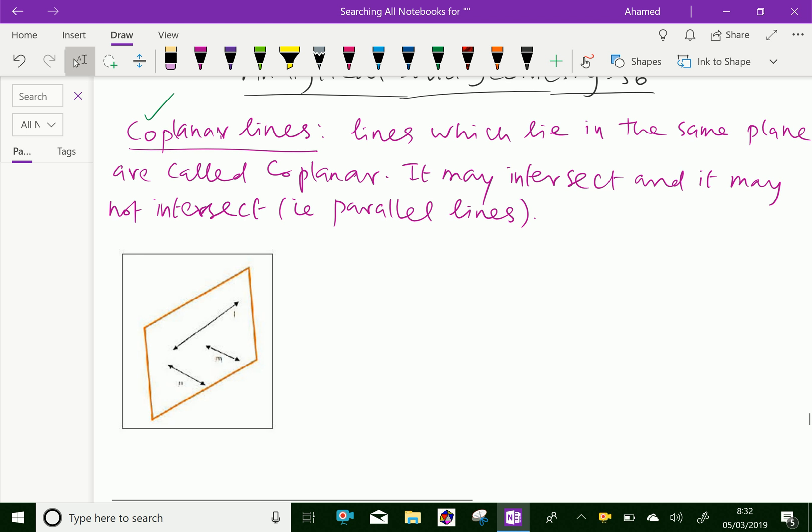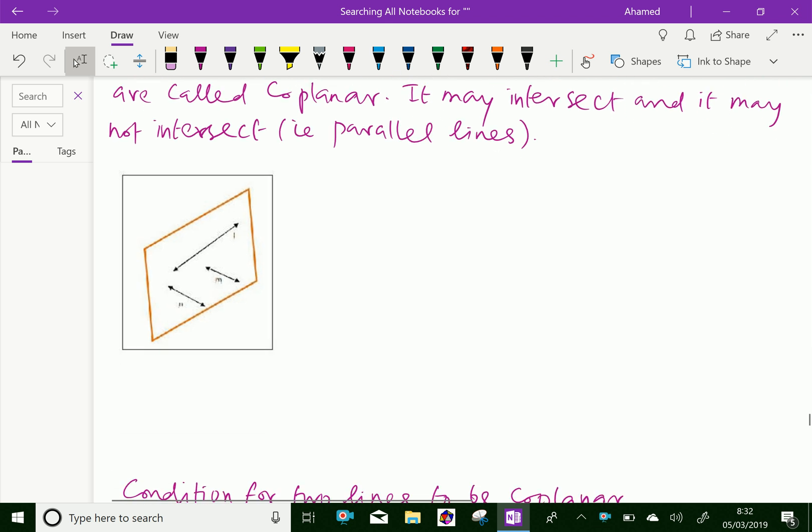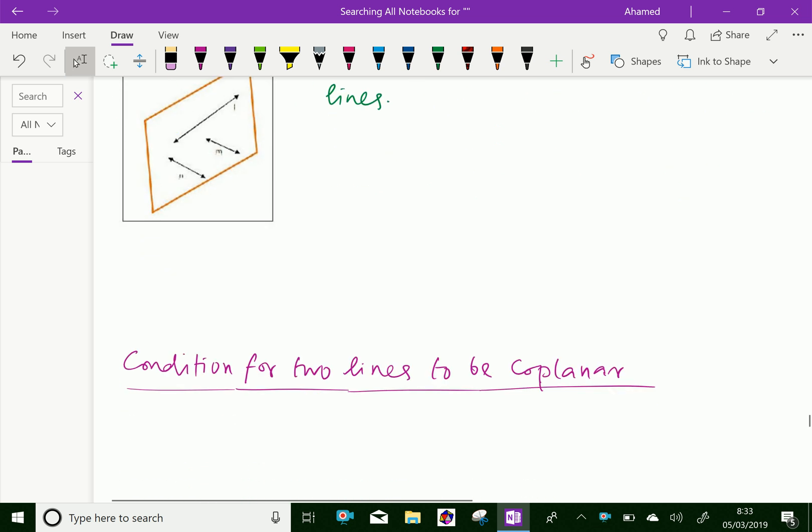Look at this figure. Here, the lines L, M, and N are coplanar lines because they lie on the same plane.